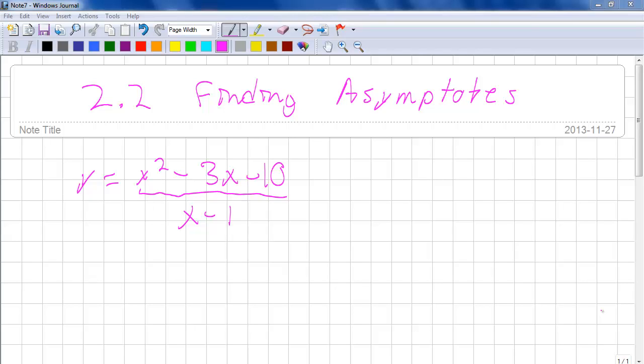Okay guys, so today we are going to find the asymptotes and see if there are any holes in the function x squared minus 3x minus 10 divided by x minus 1.